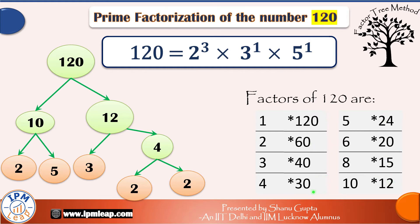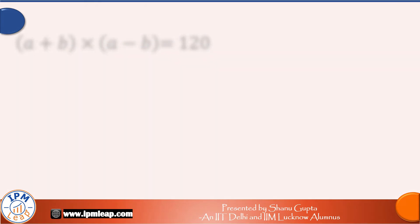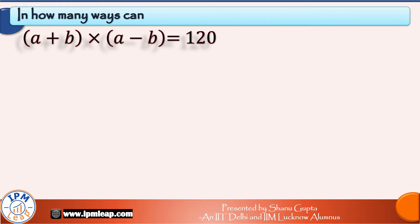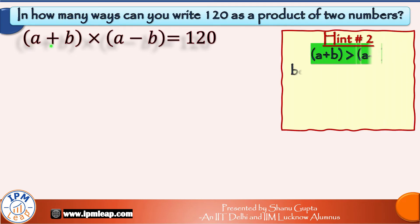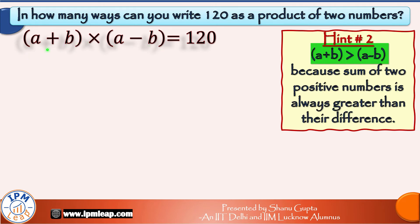Next step is quite simple. When we write 120 as a product of two factors, these should be equal to the terms a plus b and a minus b respectively. Just pay attention,